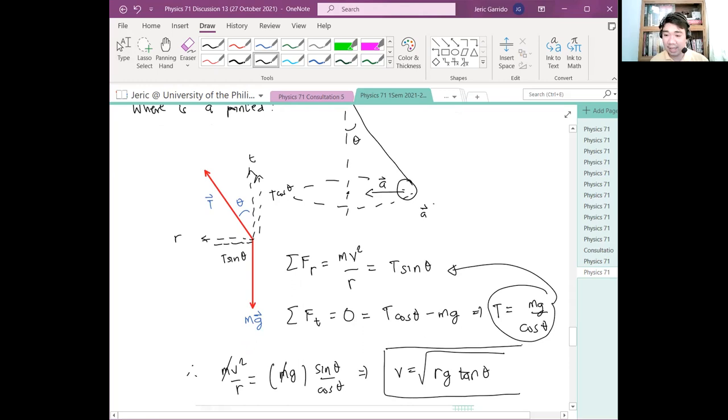Questions? So, ito yung tamang sagot. Nakuha? Gets? Nakuha to? Gets? Again, the direction of the acceleration vector is towards the circle formed by the motion. Yung center na yun, yung hinahanap ko. So, dito, you have an axis. It should be perpendicular to the axis. This should be perpendicular. Okay? The acceleration is perpendicular to the axis of rotation of the tether ball.